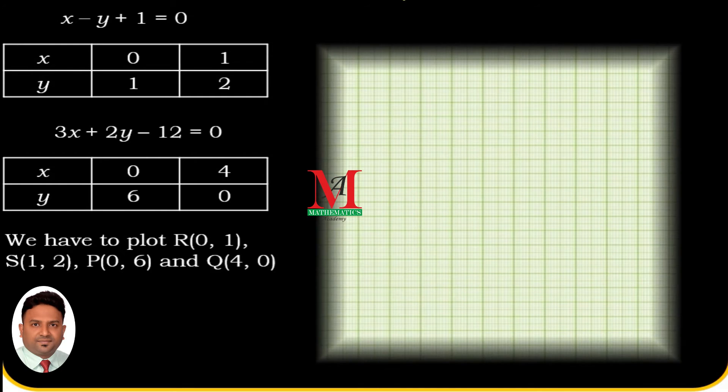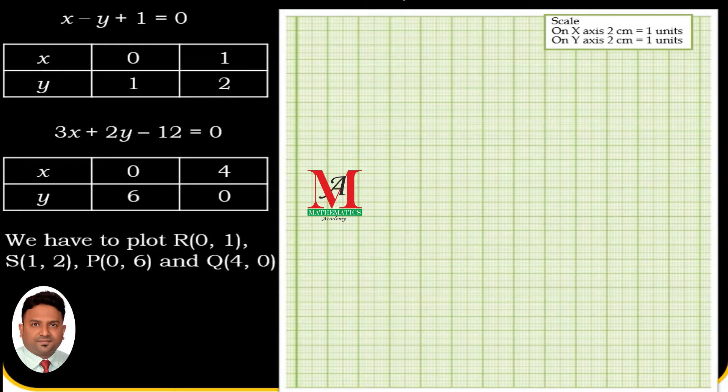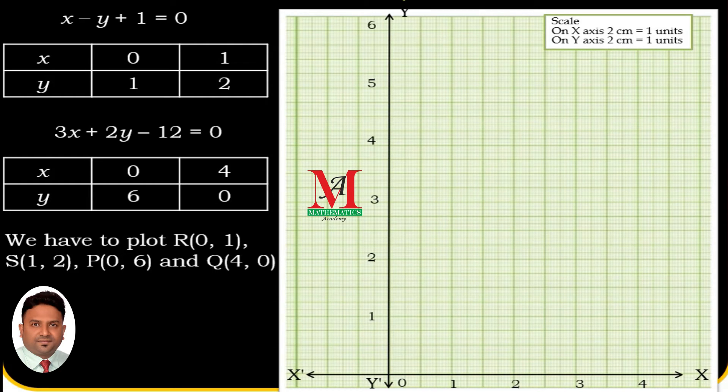Now, time to draw the graph. This is the graph paper with x-axis, y-axis, and scale. You will see that the scale is 2 cm on the x-axis represents 1 unit, and similarly, 2 cm on the y-axis represents 1 unit.